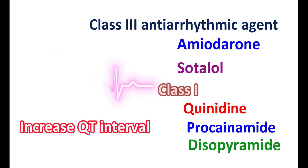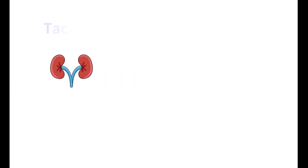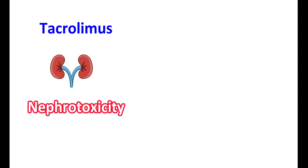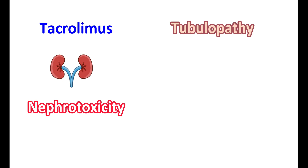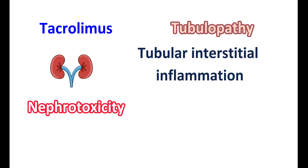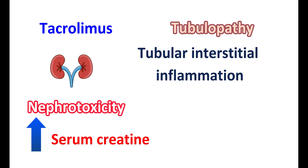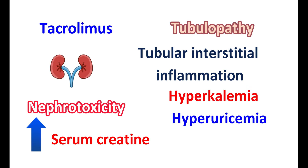Nephrotoxicity: One of the important side effects of tacrolimus is nephrotoxicity. It can produce constriction of renal blood vessels and even produce toxic effects leading to tubulopathy, affecting the reabsorption and secretion of important components in the tubules. It can also cause tubular interstitial inflammation. Tacrolimus may also lead to development of acute renal impairment, with high levels of serum creatinine, hyperkalemia, hyperuricemia, and decreased secretion of urea.